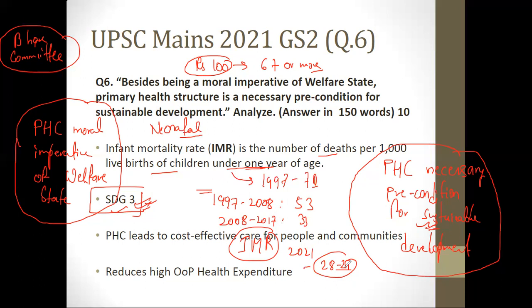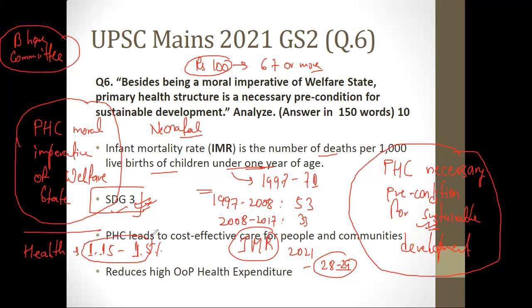The fourth point is about health spending data. According to various health ministry and economic survey data, India is currently spending around 1.15 to 1.5 percent of GDP on health.